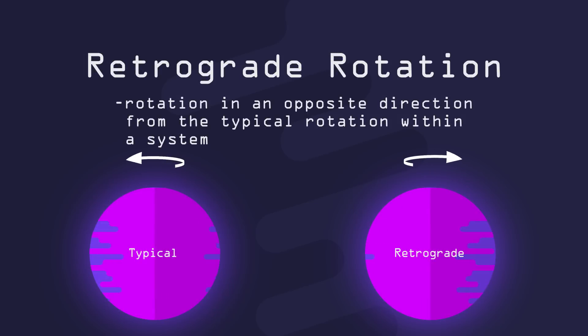Rotating clockwise is called retrograde rotation and may have been caused by a collision with an asteroid or another object which caused the planet to change its rotation.